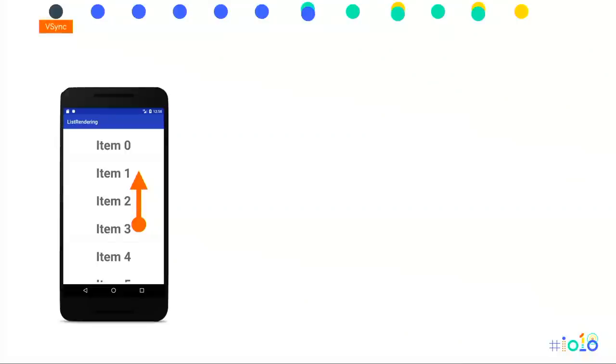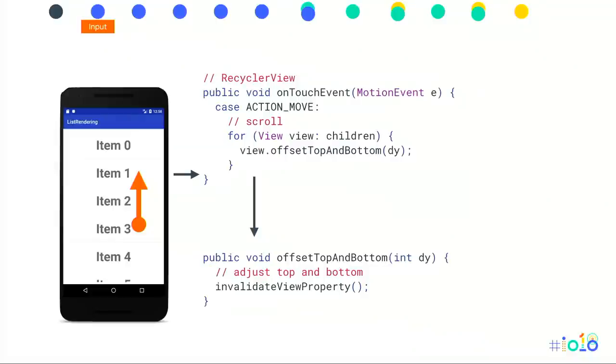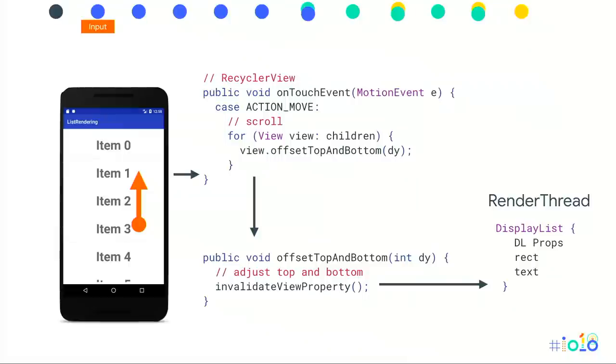They keep dragging, and on the next frame we process input: onTouchEvent sees that they've actually moved. We know how much they moved because we saved the old x and y and calculate the delta. We call offsetTopAndBottom — for all views on screen, we simply move them in y. offsetTopAndBottom calls invalidateViewProperty, which is slightly different from regular invalidation. This is an optimization from around Honeycomb with display list properties. Display lists have properties like translation, rotation, and alpha that we can change directly in the display list structure without re-rendering the view — picked up at GPU issue time. Very fast.